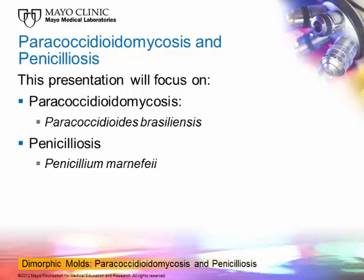This discussion will center on paracoccidioidomycosis and penicillosis. They are found in two different parts of the world. Dimorphic fungi usually have specific geographic niches — paracoccidioidomycosis is found in Central and South America, and penicillosis is found in places like Vietnam and Thailand. We will discuss these two organisms and the infections they cause.